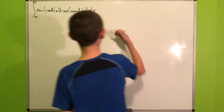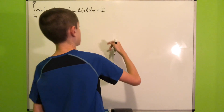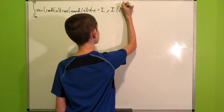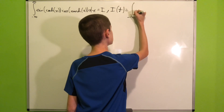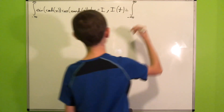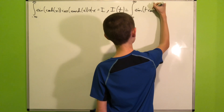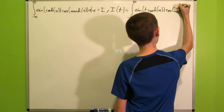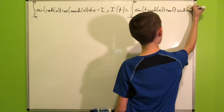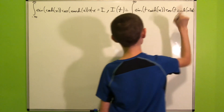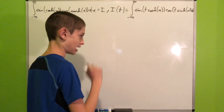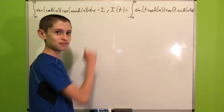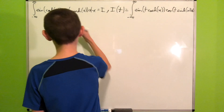We'll call this integral I. Then we'll define a new function I(t) as the integral from negative infinity to infinity of sine of t·cosh(x) times cosine of t·sinh(x) dx. And as you might guess, we are going to differentiate this with respect to t.